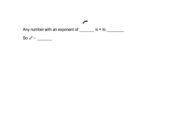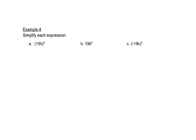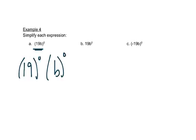Any number with an exponent of 0 is equal to 1. So a to the 0 is equal to 1. Here we have something in parentheses raised to the 0 power. That means everything in parentheses has that 0 exponent — it goes to everything inside. So 19 to the 0 power is 1, b to the 0 power is 1, and 1 times 1 is just 1.